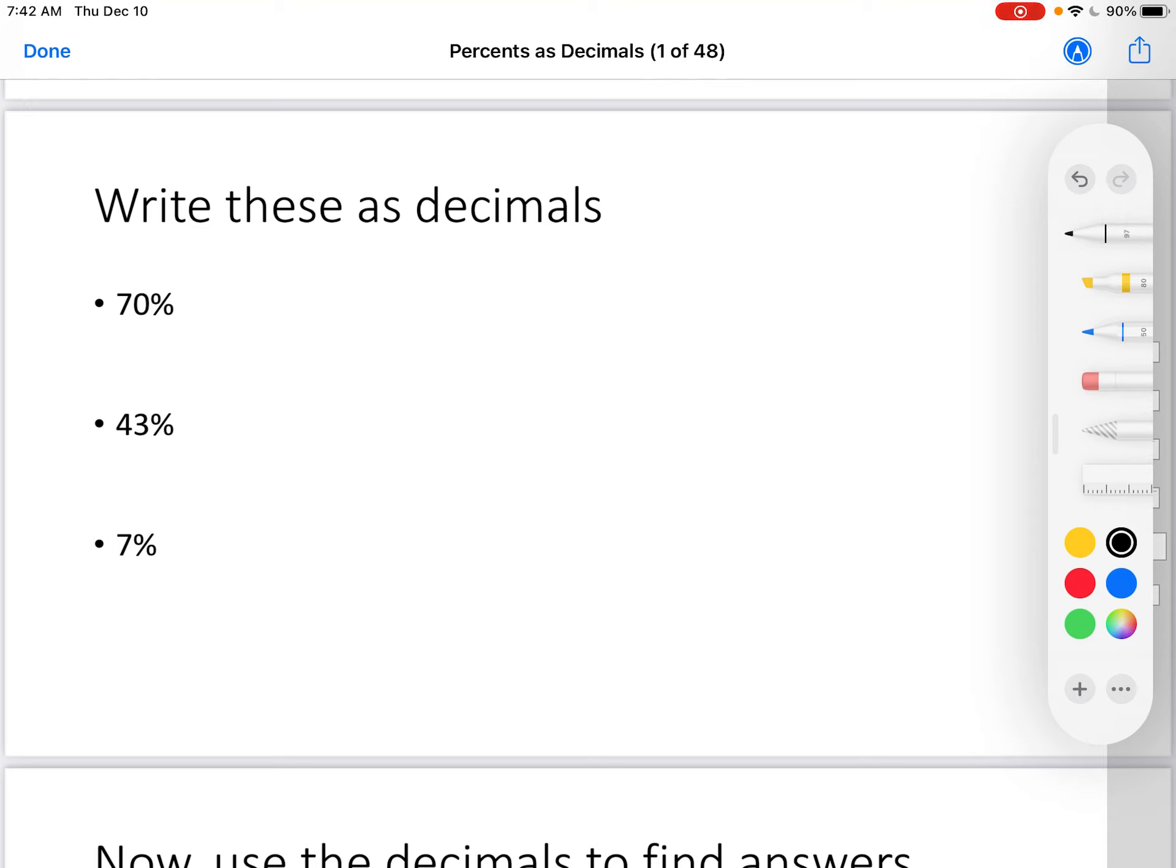All right, let's write these percents as decimals. 70% would be 0.70 in the hundredths place. However, that should be simplified to 0.7. After all, this zero is only saying there's nothing there, so why not simplify it and just put nothing there? 43% is 0.43. The 3 is in the hundredths place. That's not a trailing zero. It says there are 3 there. Let's not drop it.